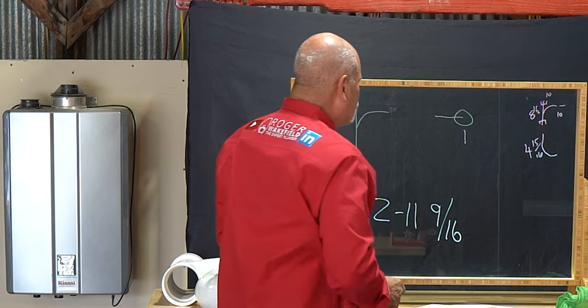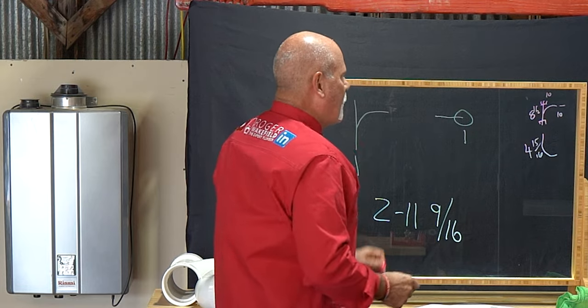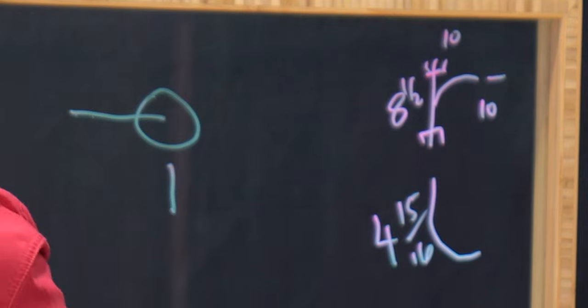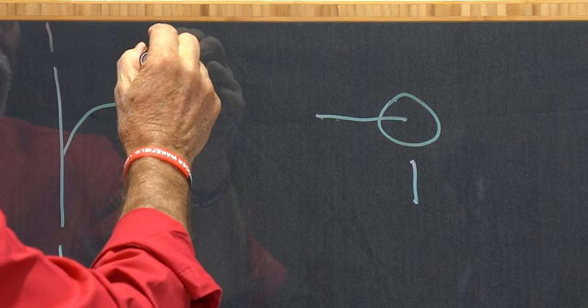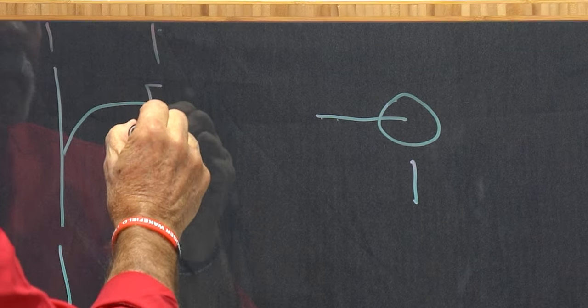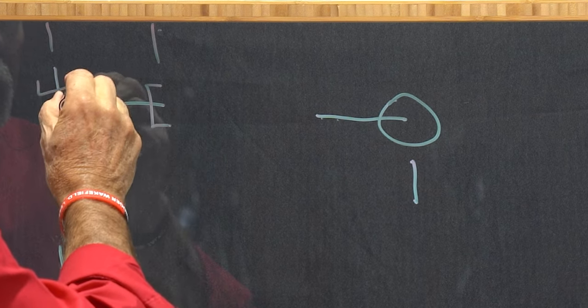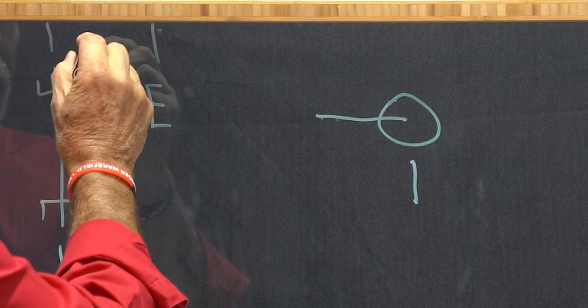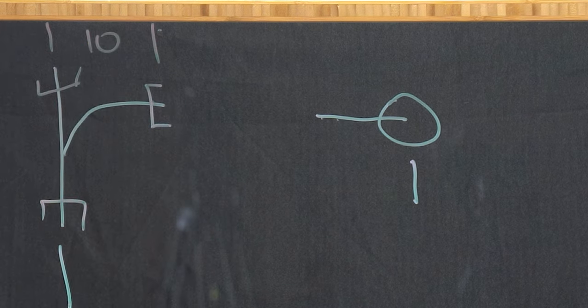So you're going to take your two foot 11 and nine sixteenths. And then if you look, we're pulling out 10 inches right here. Remember from here to here, and this is also from makeup on it, just like it is on the other ends. So from makeup, we know we've got 10 inches. 10 inches.